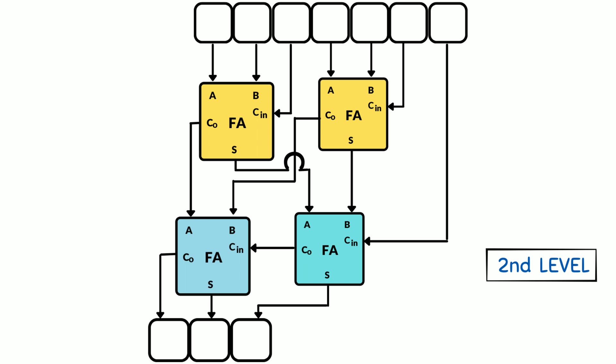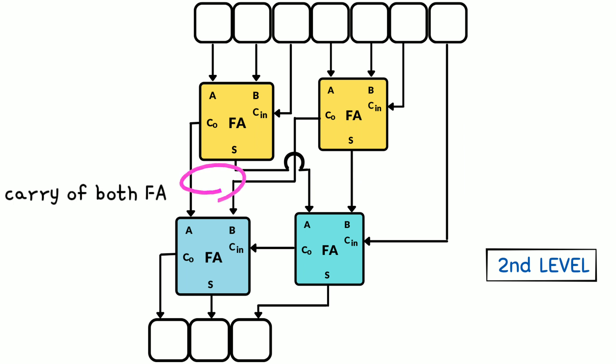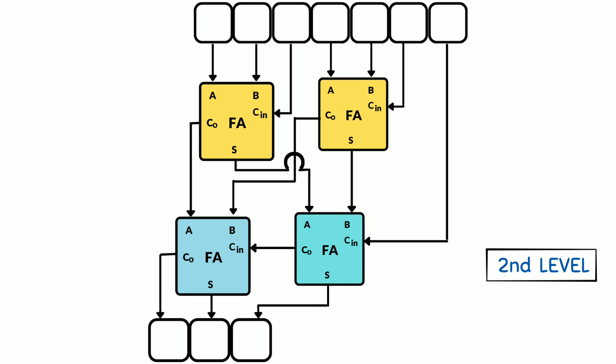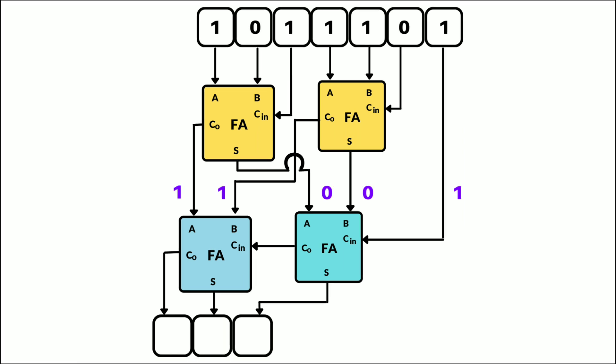In the second stage, we will add the outputs of the first six bits. Both sums from the first-stage full adders go into one full adder, and both carries go into another full adder. The LSB carry-in feeds the first full adder in the second level, and its carry out becomes the carry in for the other full adder. The final output is three bits: carry out and the sums of both full adders.